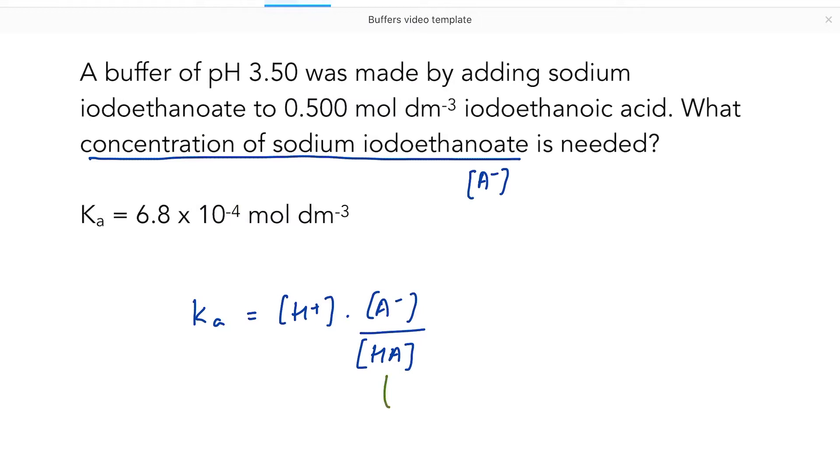So we are trying to find A- and HA is the concentration of the weak acid. So I know that to be 0.5 mol per decimetre cubed. I know Ka, it's given to me in the question, 6.8 times 10 to the minus 4.